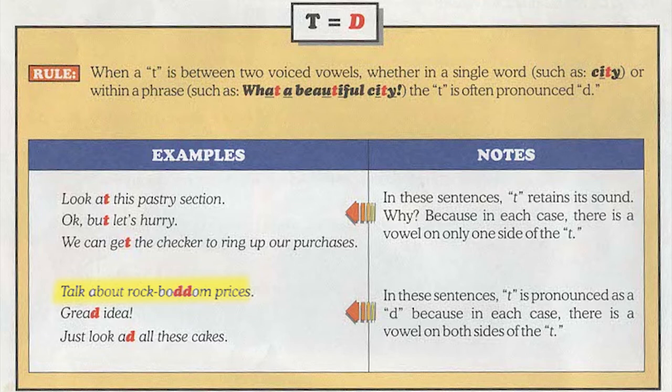Here's another example. The sentence 'Okay, but let's hurry' — the word 'but' has a T and sounds like a T. But now look at 'Great idea.' Did you hear that? 'Great idea.' The word 'great' has a T but it sounds like a D. I'm going to give you one more example and then explain why we do that.